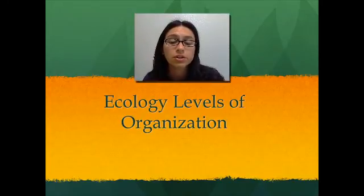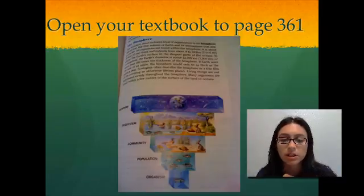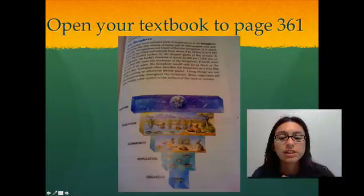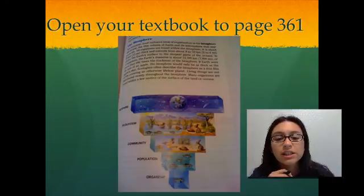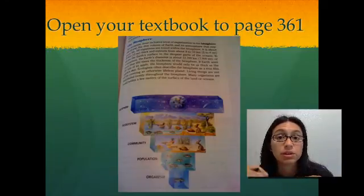The first thing you're going to need to do is turn your textbook to page 361. On page 361, you will see the levels of organization for ecology. In the beginning of class, we looked at the levels of organization for an organism — going from an atom all the way up to the organism itself. Here in ecology, it goes from organism, and there are six levels, including organism.